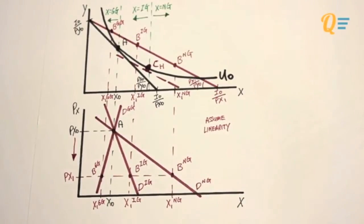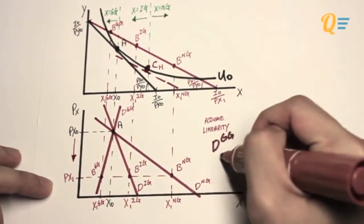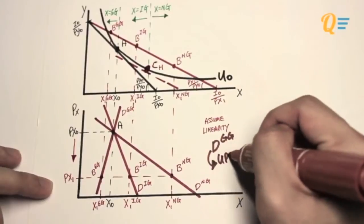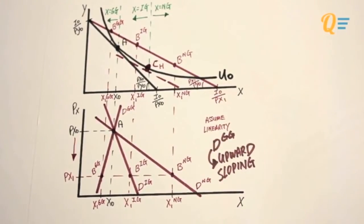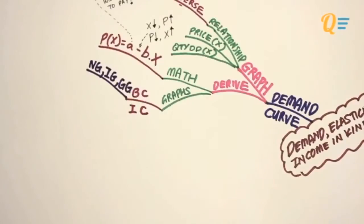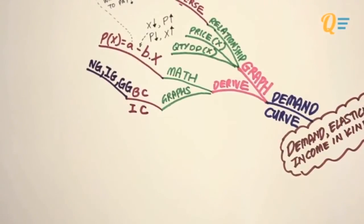So this is how I've derived three different demand curves, given that good X might be an inferior, normal, or a Giffen good. And we see that the demand curve for a Giffen good is upward sloping. Is it always the case? Well, we'll find out later.